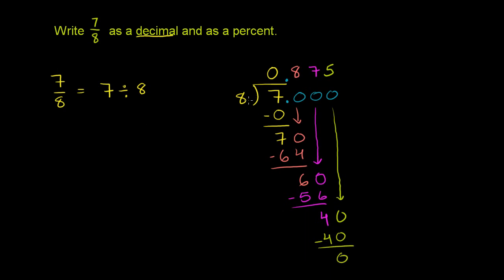So as a decimal, we just figured out that 7/8, which is equal to 7 divided by 8, is exactly 0.875. So it is equal to 7 over 8, as a decimal, is equal to 0.875.